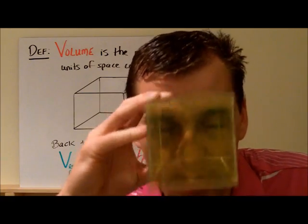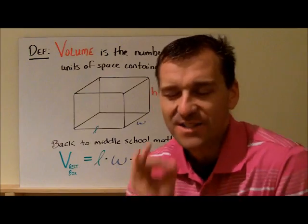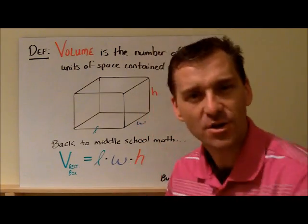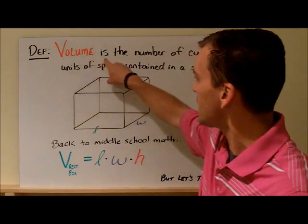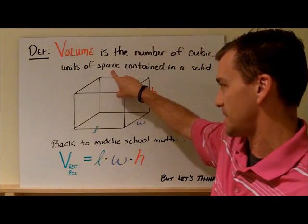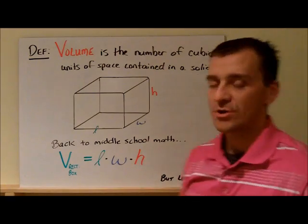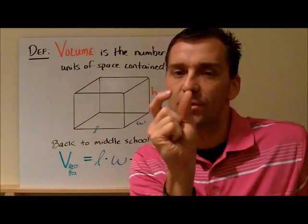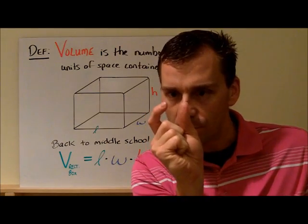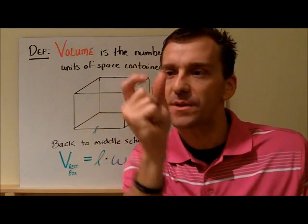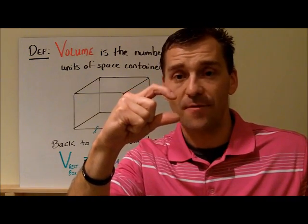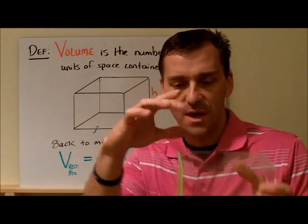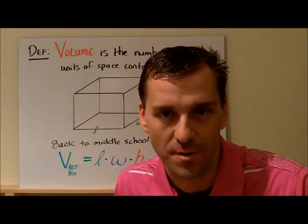Let's write down the definition of volume. Volume is the number of cubic units of space contained in a solid. We're not talking about square inches on the outside, we're talking about cubic units - cubic inches, cubic feet, cubic yards, cubic miles - the amount of cubic little units you can put inside of a shape.